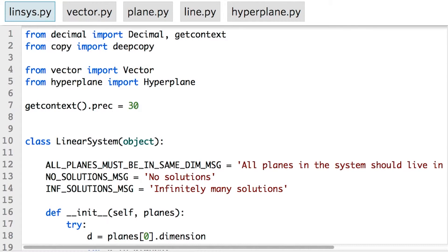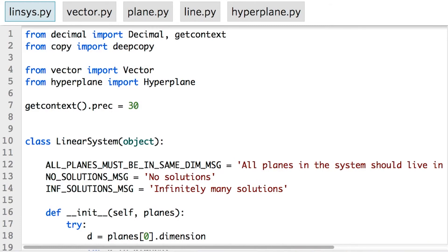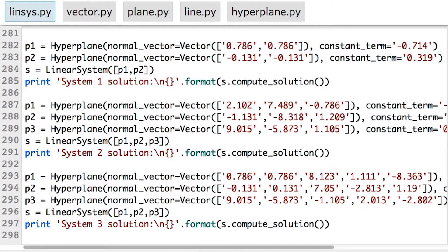Going back to the linear system class, after importing the hyperplane class from my hyperplane module, and without changing any other code in my linear system class, I can now build a linear system out of hyperplanes. And as long as the dimensions of each hyperplane in a system are the same, it will work as expected.